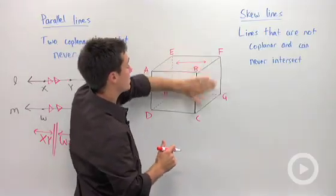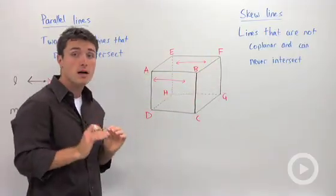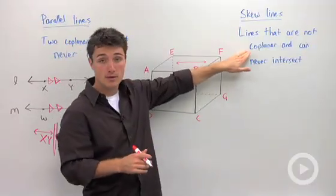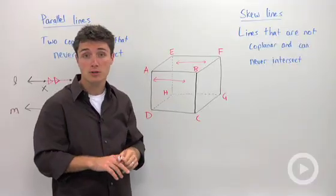These are never going to intersect, but they're not parallel because they're not coplanar. They're not in the same plane. So on your true and false question when they say parallel lines are two lines that never intersect, you're going to say false.